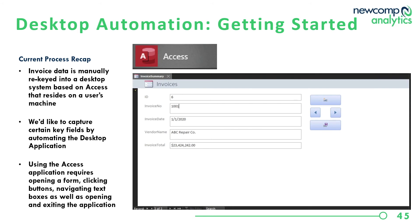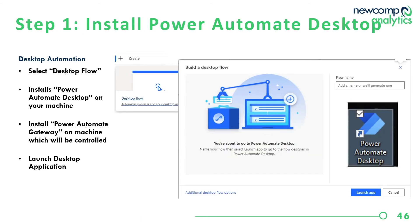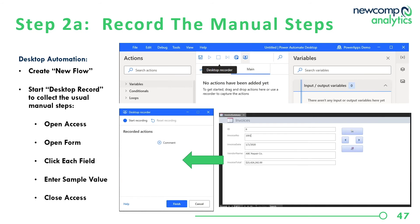I'll give Power Automate Desktop an example of how I enter information into the form with some manual sample numbers, and then we can update the recording to identify the data points and connect that recording to AI Builder's output, which will funnel those invoice values into the desktop application when it replays the recorded steps. Power Automate Desktop can do a lot of different things — from web automation to UI automation — including filling in forms, moving things around the screen, and changing the interface.